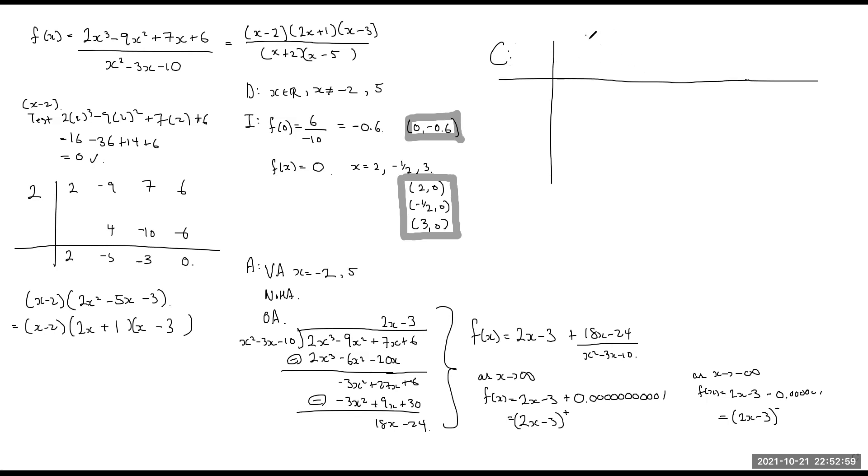So let's put all of our vertical asymptotes and all of our x-intercepts in this chart. In fact, my vertical asymptotes are negative 2 and 5, and these are my x-intercepts. So in chronological or ascending order, negative 2, then negative half, and then 2, and then 3, and then 5.